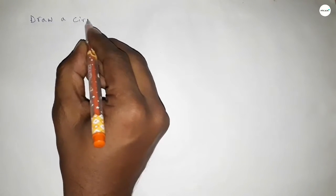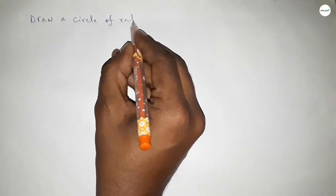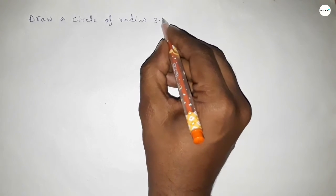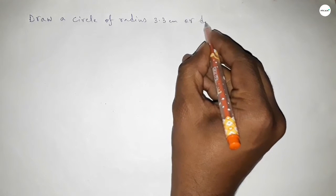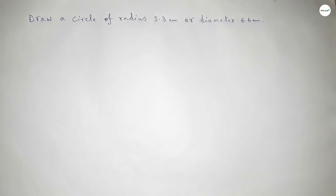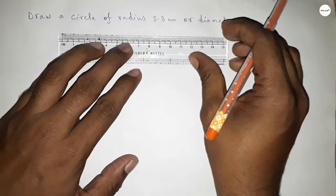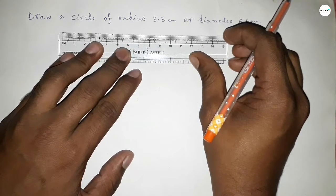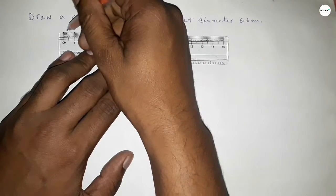Hi everyone, welcome to a size chair classes. Today in this video we have to draw a circle of radius 3.3 centimeter or diameter 6.6 centimeter. So let's start the video. First of all, drawing here the radius 3.3 centimeter.